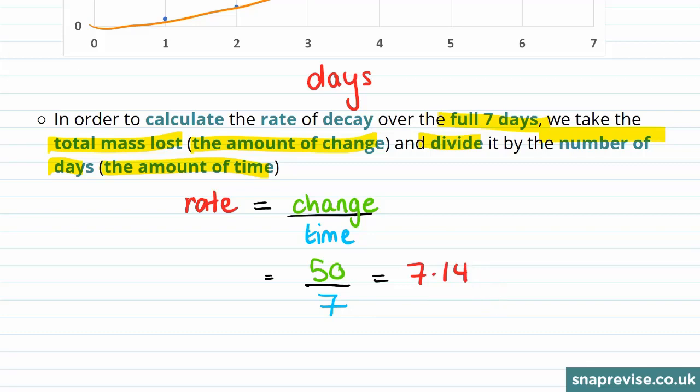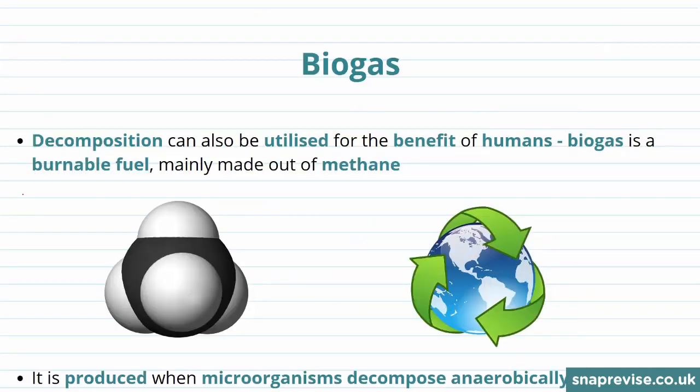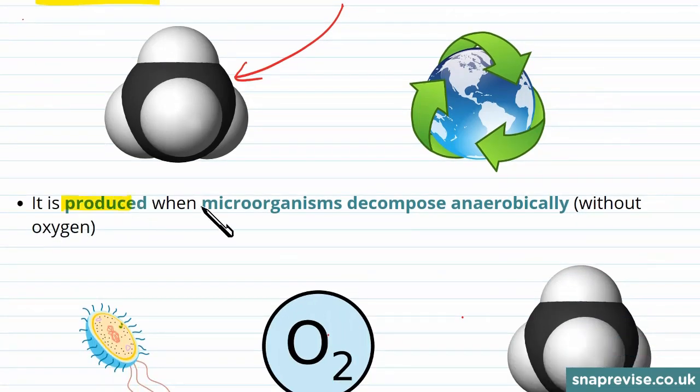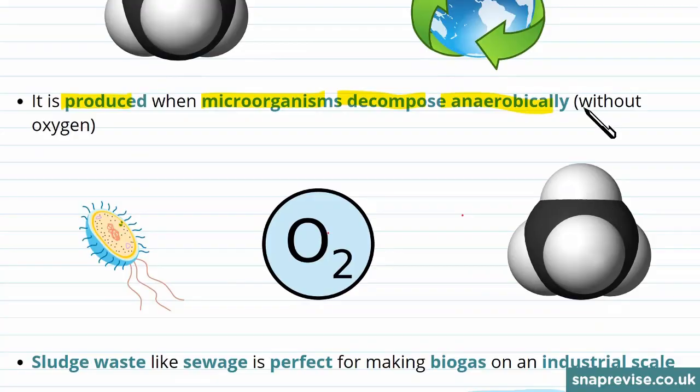Decomposition can be really useful as it can be used for the benefit of humans. Biogas is a burnable fuel and it's mainly made out of methane - this is what a methane molecule looks like. Biogas is produced when microorganisms decompose anaerobically, and this means without oxygen.